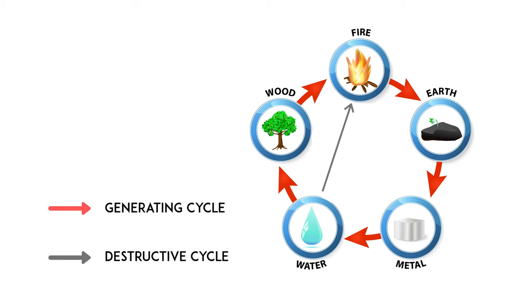However, as I mentioned in the last video, there must be a yin and yang balance. If the five elements keep generating, there will be an excess of everything, so we must have a destructive cycle. The law of the destructive cycle is: water restrains fire, fire restrains metal, metal restrains wood, wood restrains earth, and earth restrains water. Water can put out a fire — thus water restrains fire. Fire can melt metal and make it weak — thus fire restrains metal.